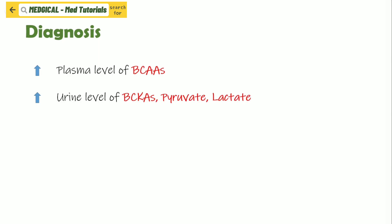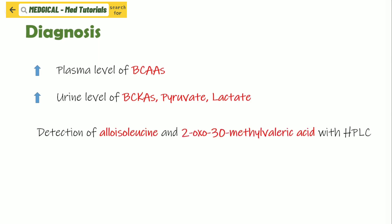Diagnosis of Maple Syrup Urine Disease consists of elevated plasma levels of branched-chain amino acids, elevated urine levels of branched-chain keto acids, pyruvate, and lactate. Doctors can also perform detection of alloisoleucine and 2-oxo-3-methylvaleric acid with high-performance liquid chromatography. They can also do newborn screening.